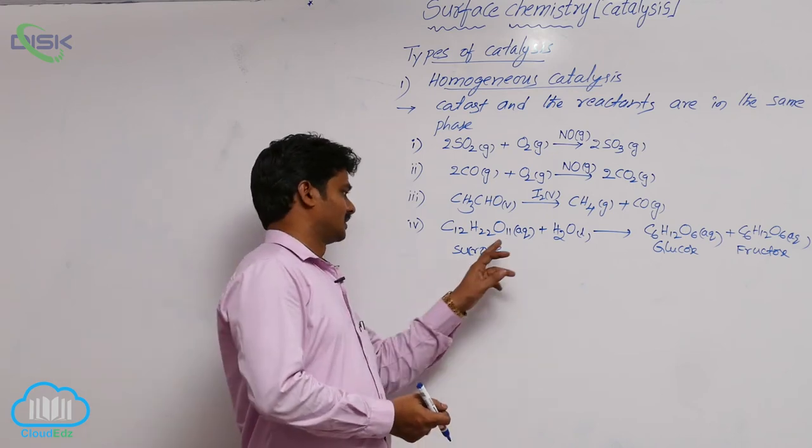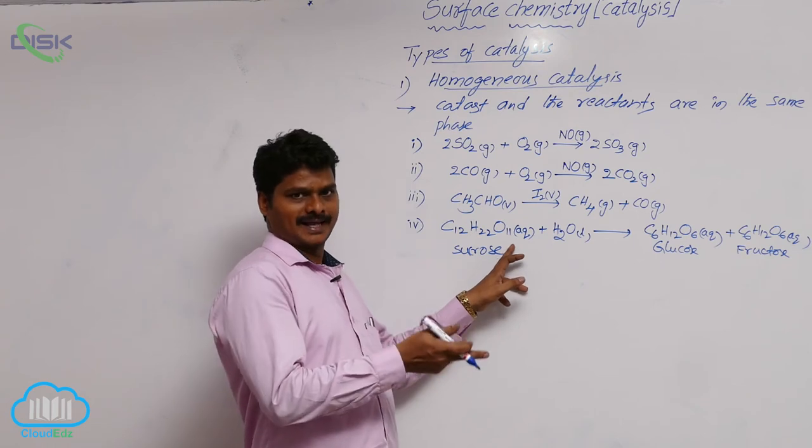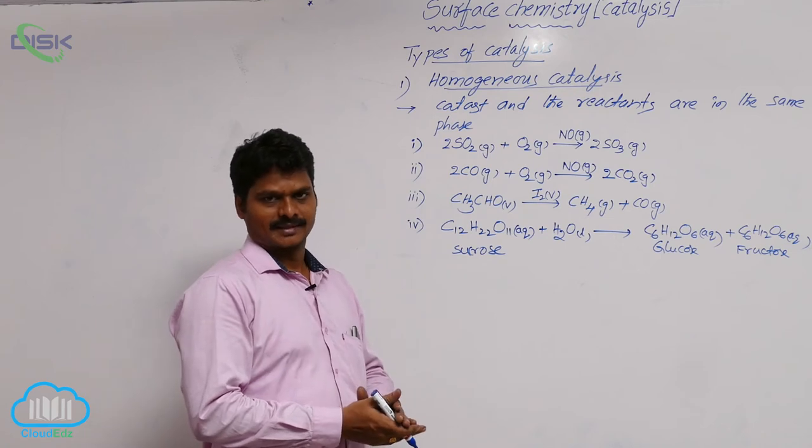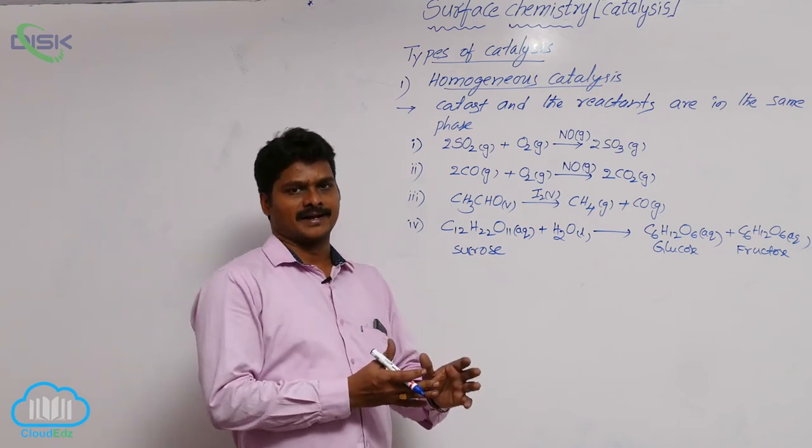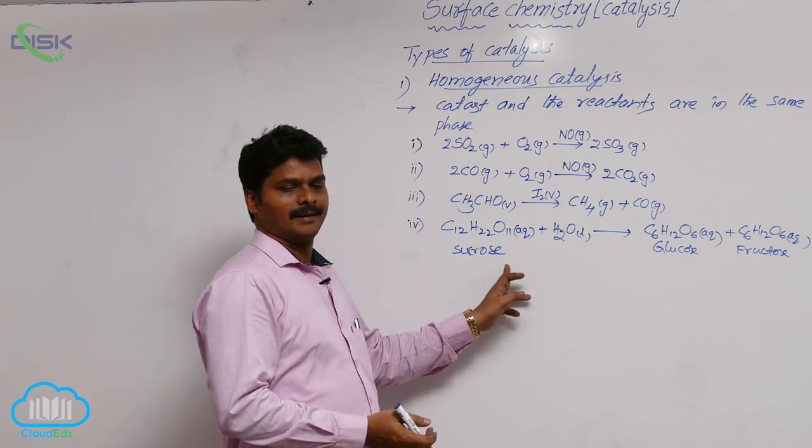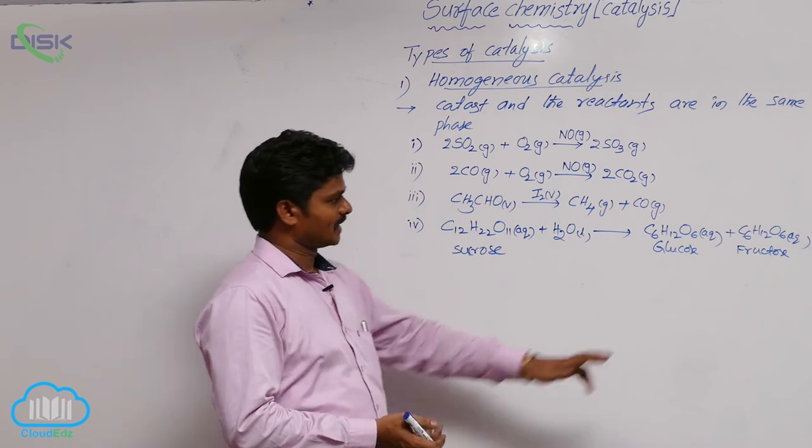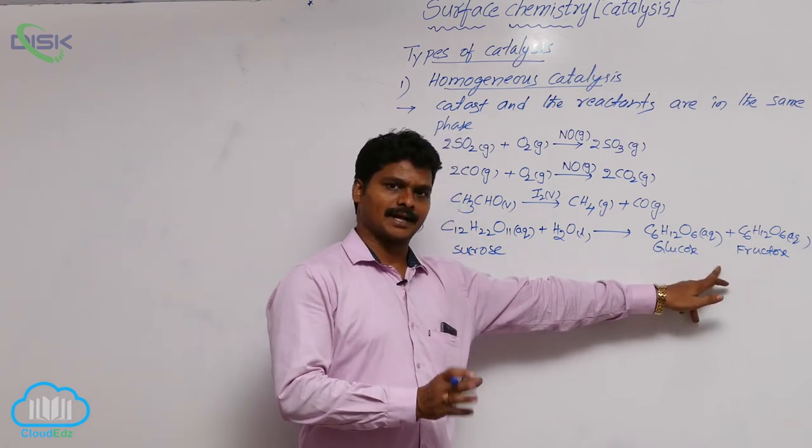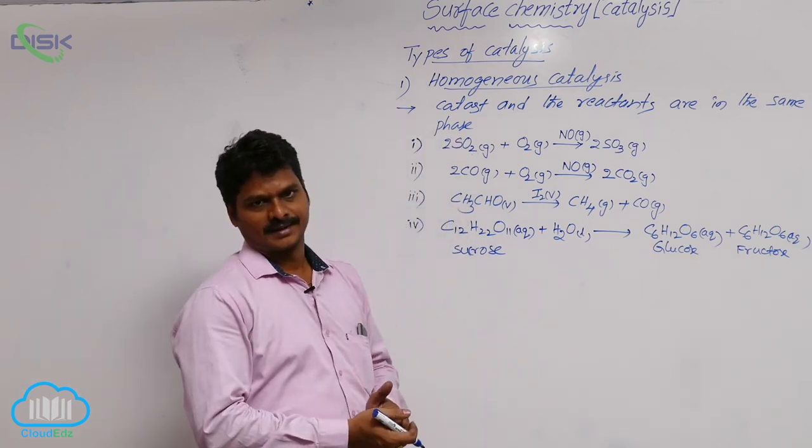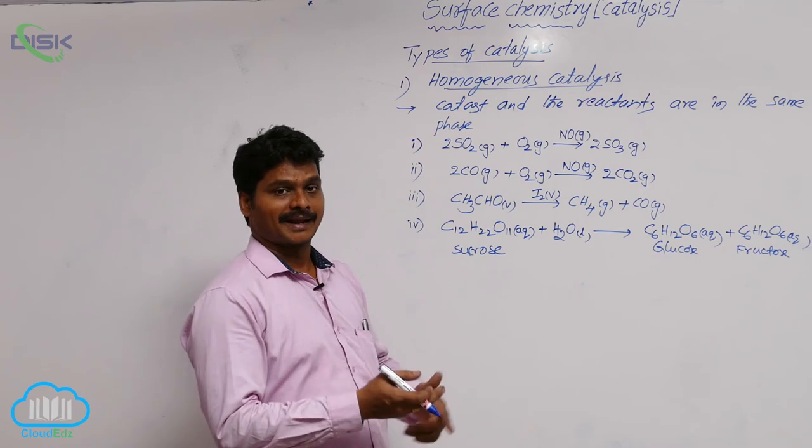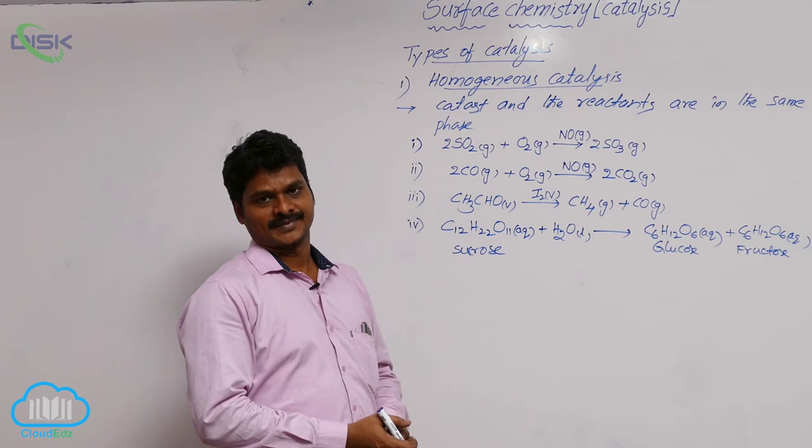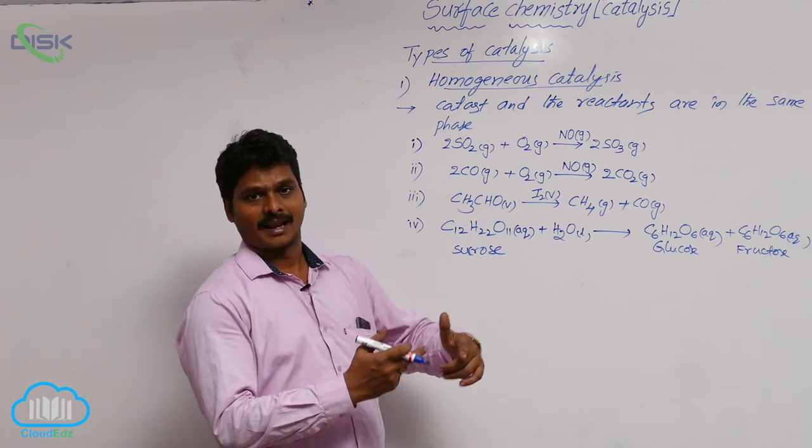Why it is said to be inversion of cane sugar? In this reaction, before the reaction, aqueous solution of sucrose is dextrorotatory. That means it rotates plane polarized light towards right, dextro. But after the reaction, the products formed, glucose shows dextrorotatory, whereas fructose shows levorotatory. But levorotatory angle of fructose is more than dextrorotatory angle of glucose.